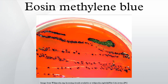On EMB agar, if E. coli is grown, it will give a distinctive metallic green sheen. Some species of Citrobacter and Enterobacter will also react this way to EMB. This medium has been specifically designed to discourage the growth of gram-positive bacteria.